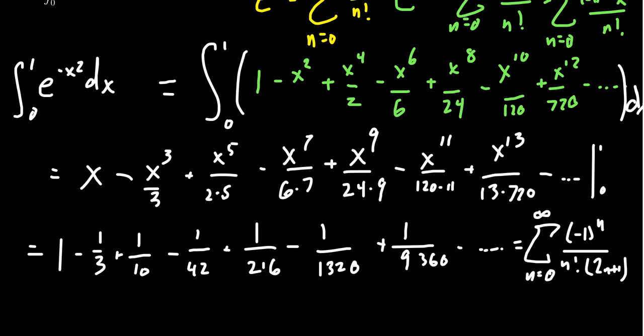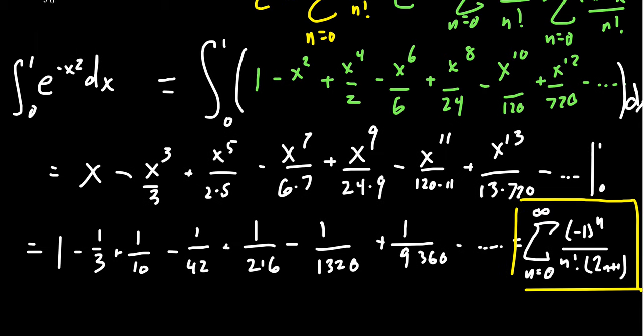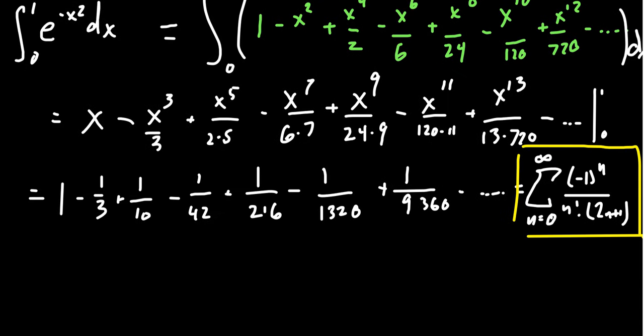Now, we probably need to estimate this to get this area under the curve here. And so we're going to estimate this using some partial sum. But what partial sum should we use, S sub n? Well, our error is supposed to be accurate. The remainder R sub n is supposed to be accurate to 0.001 or 1 over 1000.